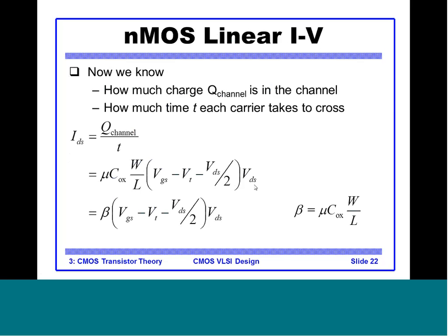We define a constant β = μ · C_ox · W/L. C_ox is technology-dependent, and W/L is fixed when we design a particular circuit — for example, when designing an inverter we fix W/L for NMOS and PMOS. The purpose of defining β as a constant is to study the effect of voltage changes on IDS, assuming μ, C_ox, W, and L are constant for the purpose of drawing the IV curve.